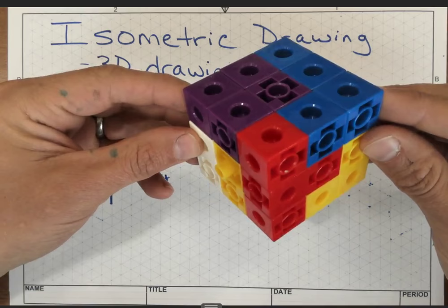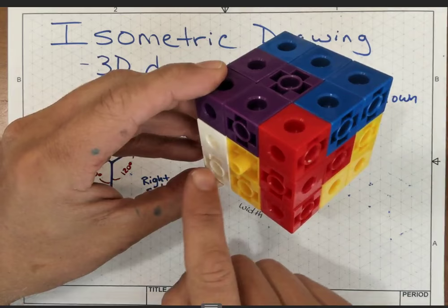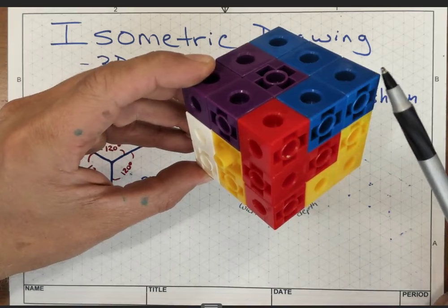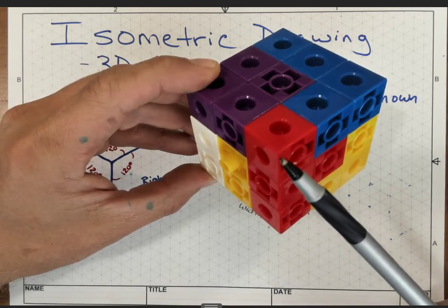Now, if you look at this and we look at the edges where the front and the top meet, this edge right here, and the edge where the front and the right side meet right here, those edges form a letter of the alphabet, and it is the letter Y.